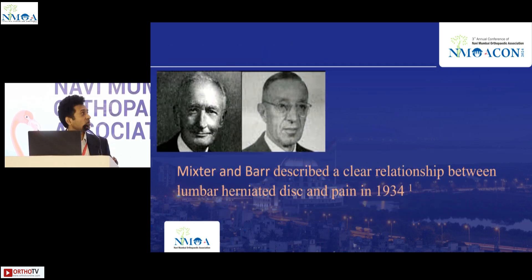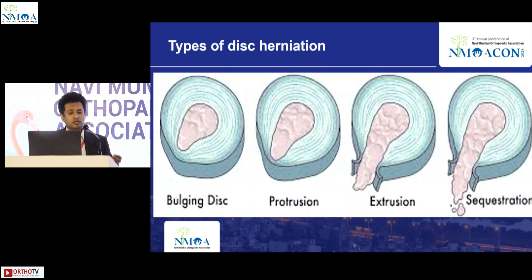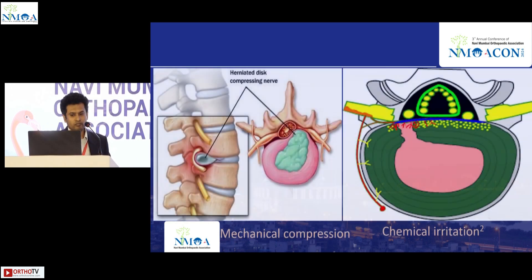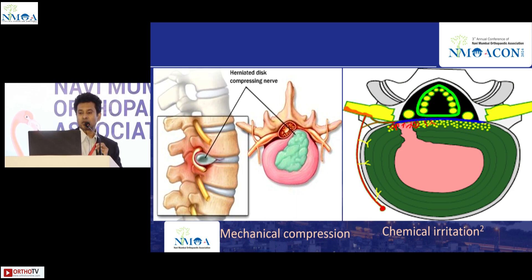Professor Mixter and Barr were the first to describe disc herniation as the cause of low back pain and radicular pain. The types of disc herniation are bulging, protrusion, extrusion, and sequestration. It is now well established that radicular pain and back pain are not just due to mechanical compression, but also due to chemical irritation of the nerve root.